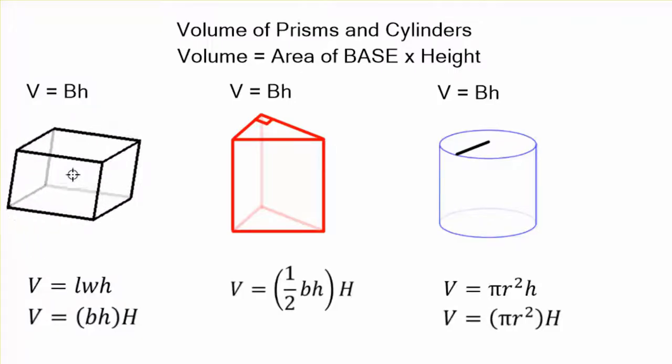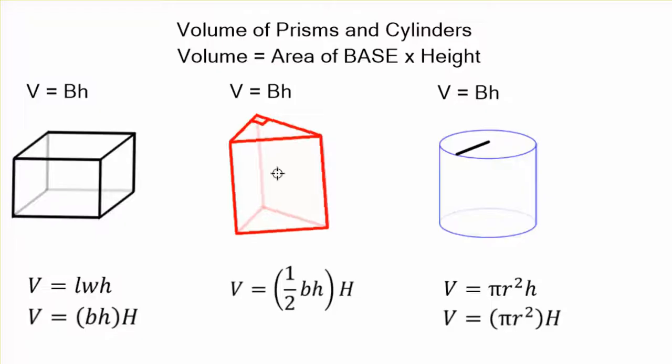No matter how it's rotated, we're still going to have the same formula: area of base times height. These can be rotated any way around. So there's the triangular prism, and there's our cylinder. Let's go ahead and rotate that around.